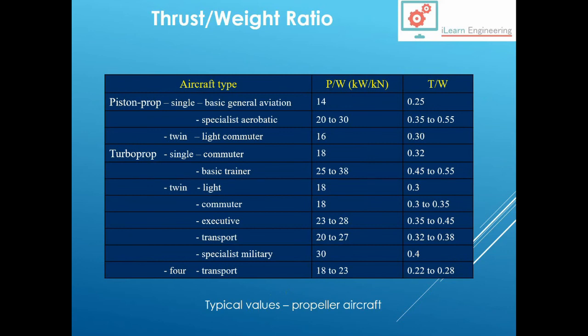Here we've got something similar, but these are for propeller aircraft, so we have to plot the power to weight ratio here. This is in different units of kilowatts per kilonewton, and it's been converted to the thrust to weight ratio. And again, once it's converted, you'll notice a similar value, somewhere between 0.3 and 0.4.